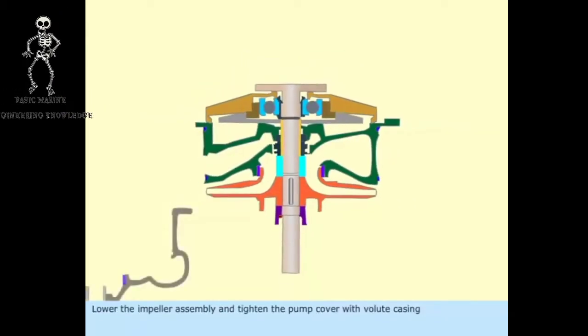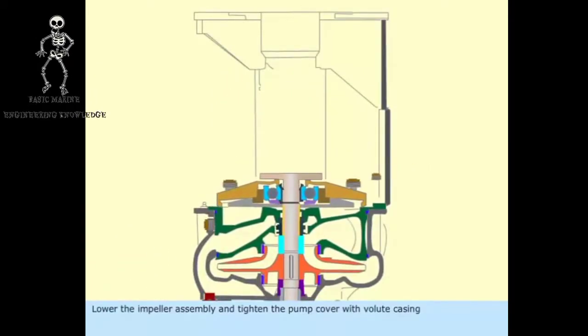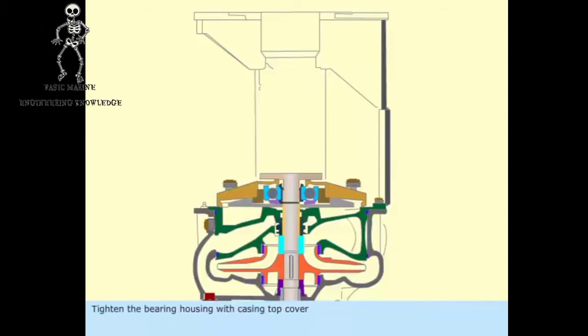Lower the impeller assembly and tighten the pump cover with volute casing. Tighten the bearing housing with casing top cover.